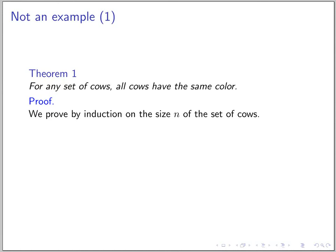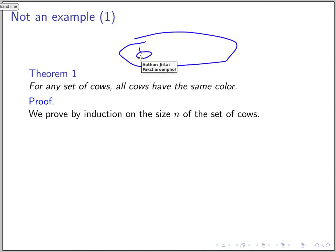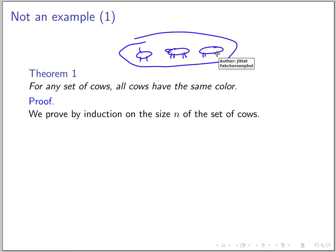Alright, to understand mathematical induction a little bit better, let's look at one incorrect example and think about it for a while to see if you can spot the error. So this theorem states that for any set of cows, all cows have the same color. This is clearly false, but we'll try to prove it by induction to see if you can see the error.